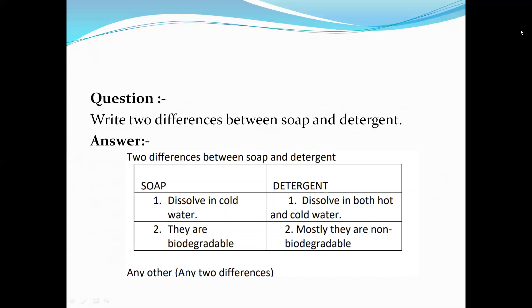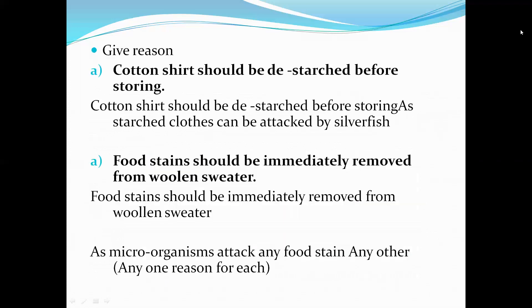The next question asks for two differences between soap and a detergent. Whenever a differentiation question comes, always answer it in a neat table form — never in paragraph form. This makes your answer crystal clear and the examiner can easily verify that you have correctly differentiated the two points side by side.